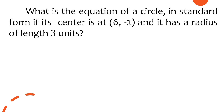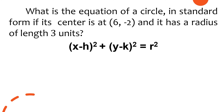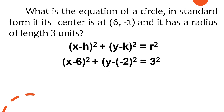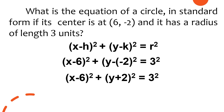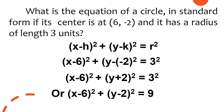What is the equation of a circle in standard form if its center is at (6, -2) and it has a radius of 3 units? Using the standard form for a center not at the origin, we substitute and simplify. The final answer is (x − 6)² + (y + 2)² = 3², or simplified: (x − 6)² + (y + 2)² = 9.